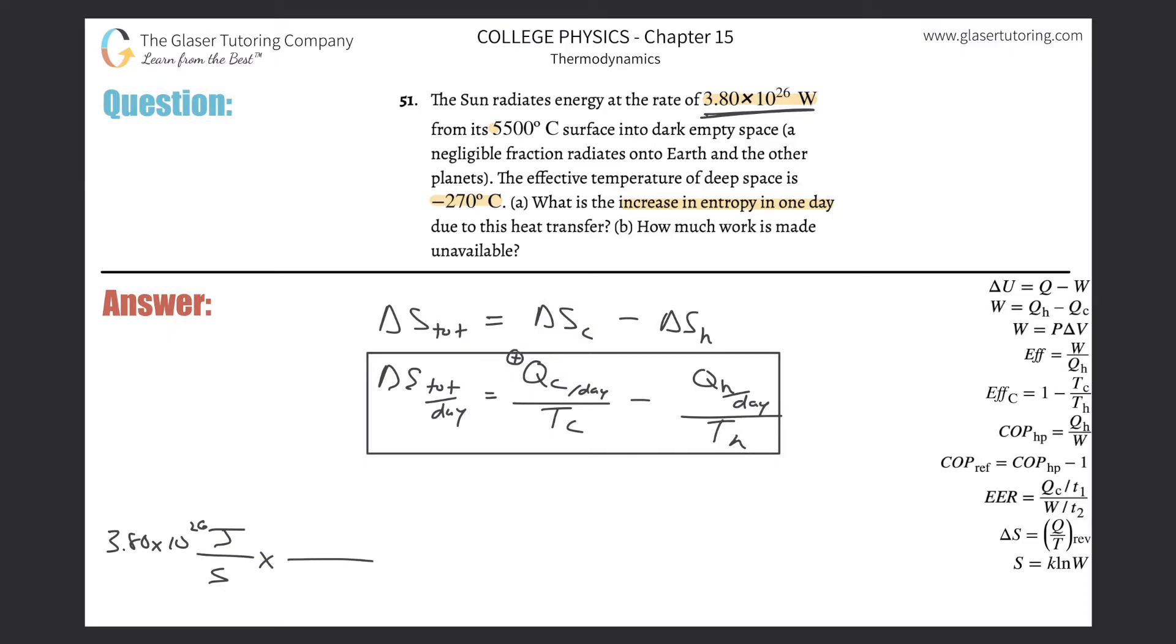Well, they want it over one day. How many seconds are in a day? Well, we can figure that out. There's going to be 3,600 seconds in one hour and 24 hours in one day. So let's just calculate that 3.8 times 10 to the 26 multiplied by 3,600 multiplied by 24. So this works out to be about 3.28 times 10 raised to the 31st.